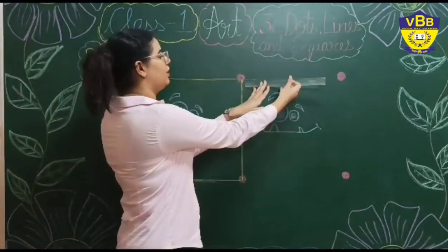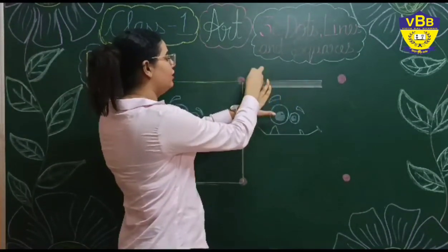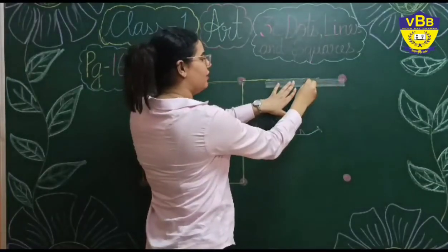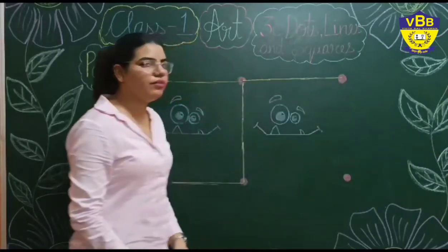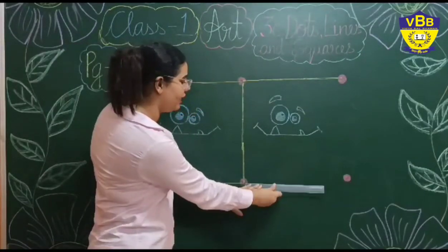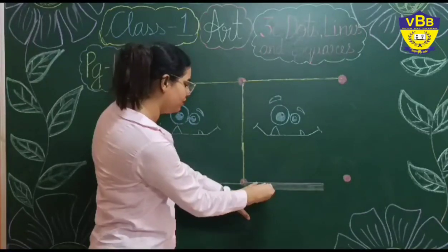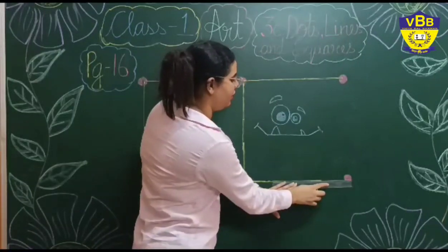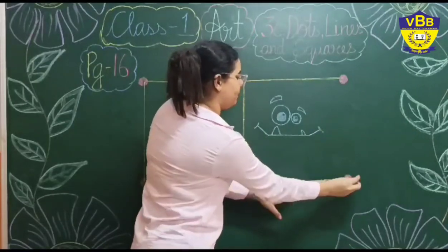Okay. So, we will put the scale in between the dots and we will make a straight line like this. Correct. Now we are going to join these two dots. We are going to place the scale in between the dots. And we are going to make a straight line like this.